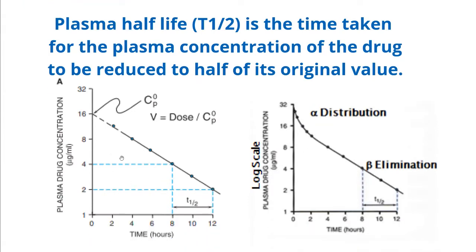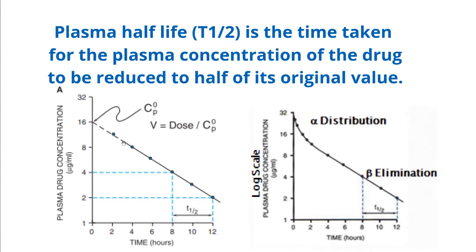Let us look at the given picture. In the picture on the left, you can see that the initial concentration of the drug is 16 microgram per ml. And then in 4 hours, it reduces down to 8 microgram per ml. You can see that the slope is constant — from 8, it goes down to 4 microgram per ml in another 4 hours, and similarly from 4 it goes down to 2 microgram per ml in another 4 hours. So if you take the original value as 16, the half-life is the time for the concentration to be reduced to 8 — from 16 it reduces to 8, so the half-life is 4 hours.